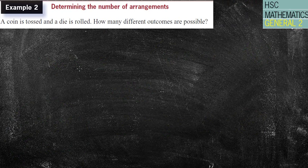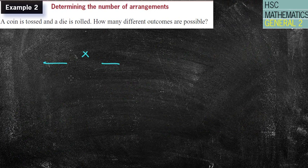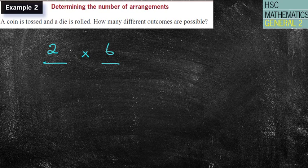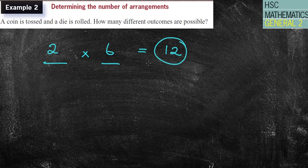So how'd you go? A coin is tossed and a die is rolled. So I've got two things occurring at the current time. We've got a coin that has two different options, a head and a tail. We have a die that has six different options, the numbers one to six. Therefore, there are 12 possible outcomes. That's my answer. Nice and easy.